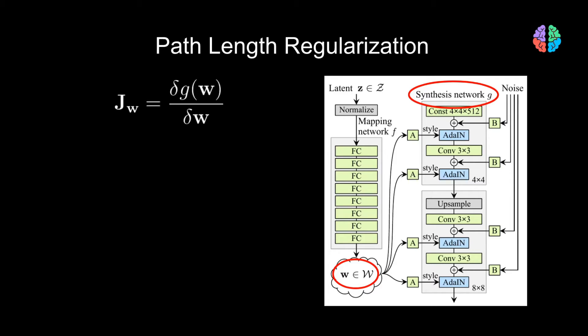Now any small change in the output image G of W with respect to the style vector W can be captured by a Jacobian matrix. We can multiply the Jacobian matrix with the outputs Y and compute a norm similar to L2 norm we use in standard regularizations.